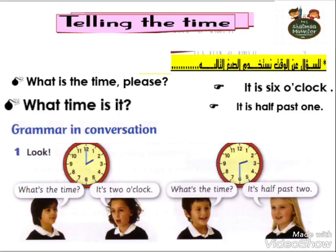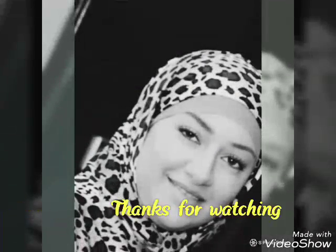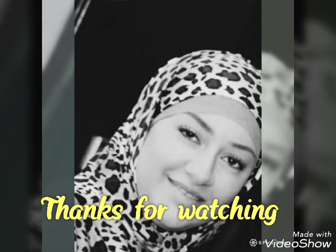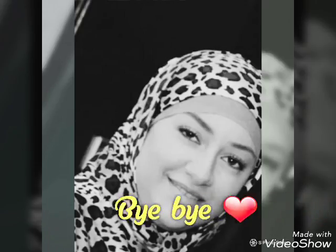ناخد بالنا إن الساعة لما بتيجي بالظبط على الـ twelve بنقول o'clock. يعني: what is the time? It's two o'clock — الساعة اتنين بالظبط. What is the time? It's half past two — اتنين ونص. ده مبسط جداً. النهاردة شرح Unit 8 لـ English Wallet for Primary 2. معكم الشيما منير. Thanks for watching and see you soon — don't forget to like and share my video. Bye!